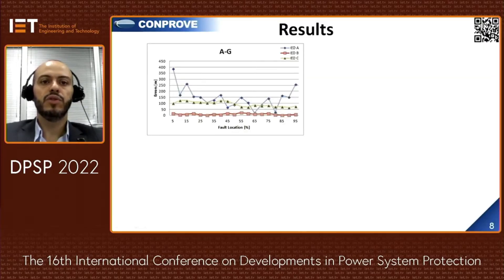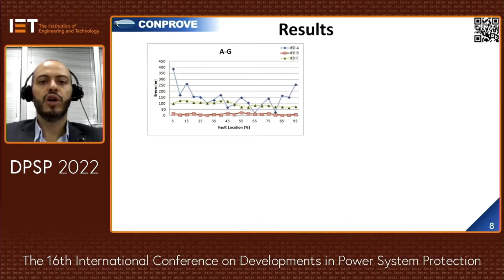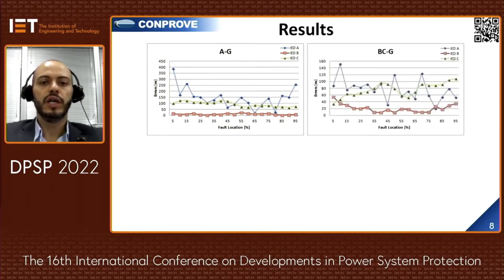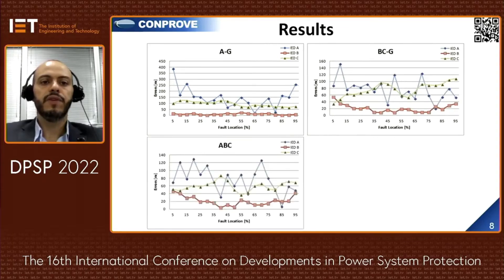The test results of the three IEDs are shown. In the graphic, the horizontal axis shows fault location in percentage with a 5% step, and the vertical axis shows the error in meters. The AG ground fault results are shown in blue for IED A, red for IED B, and green for IED C. Results are also shown for a BCG ground fault and for a three-phase fault across all three IEDs.